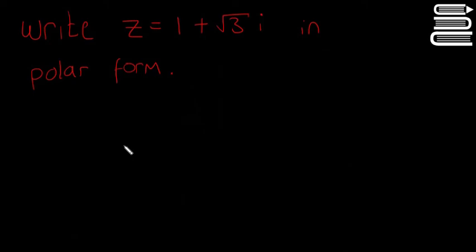In this video on complex numbers, we're going to look at the polar form again. We're going to do a little question on it. So it's asking us to write this complex number, z equals 1 plus the square root of 3i, in polar form.